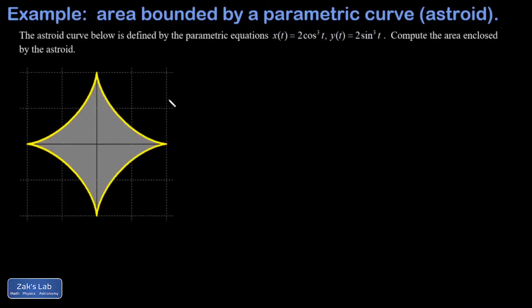In this video we're finding the area enclosed by a parametric curve called an asteroid. Here are the equations for the asteroid curve and we have a plot with the area filled in. The first thing that occurs to me is we should probably find the area enclosed by one quarter of this thing and then just multiply by four, picking the area in the first quadrant.